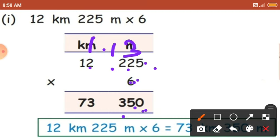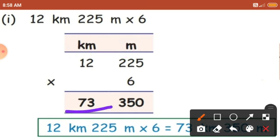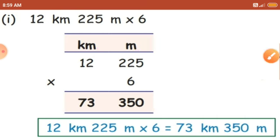Now we have a carry in the kilometers place, so we are going to multiply the kilometers place. 6 will be multiplied with 2 — so 6 times 2 is 12. 12 plus 1 carry is 13. So 3 will come here and 1 will become carry. Now 6 times 1 is 6. 6 plus 1 is 7. Now 73 is in the kilometers place and 350 is in the meters place. So the answer is: 12 kilometer 225 meter multiplied by 6 equals 73 kilometer 350 meter.